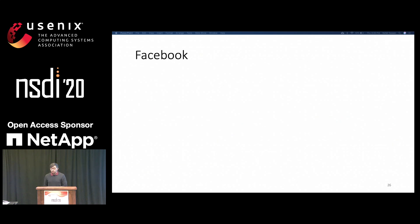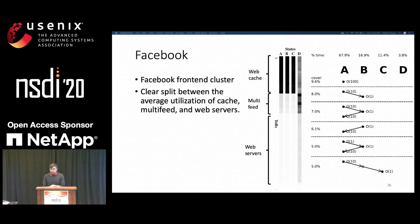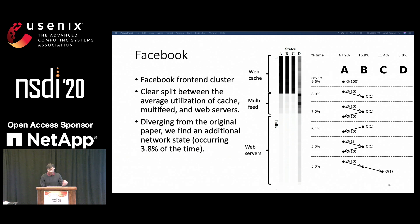TP-Prof is also able to profile more complex networks. To demonstrate this, we ran TP-Prof's profiler over a large-scale trace of Facebook front-end clusters. The states represent a total of 48 top-of-rack switches. As in the original paper describing the trace, we can observe a clear split between webcache, multi-feed, and web servers. States A and C show memcache at full utilization, web servers at low utilization, and varying levels of multi-feed traffic. Diverging from the original paper, we find an additional network state—state D—which occurs only 3.8% of the time, in which the multi-feed server utilization spikes.